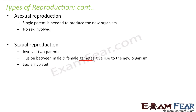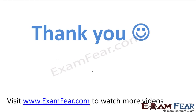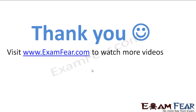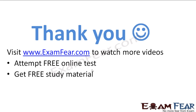In sexual reproduction the multiplication rate is slow — it is not very fast when compared to asexual reproduction. So asexual reproduction is a faster mode of reproduction when compared to the sexual mode. This was a brief description of both modes of reproduction. Please visit examfear.com to watch more videos, attempt free online tests, and get free study material.